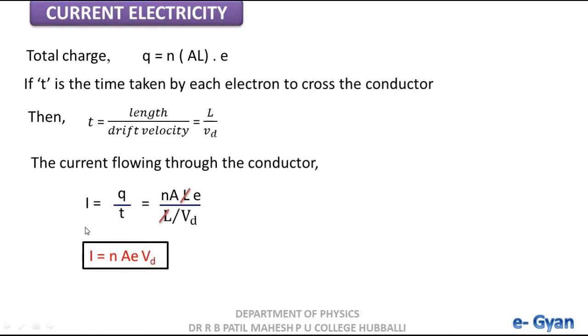We get I equal to N into A into e into Vd. This is the expression for electric current in a conductor in terms of drift velocity. Current density J is given by J equal to I divided by A. Substituting the value of I, we get J equal to N into A into e into Vd divided by A. Since A cancels, J equals N into e into Vd.